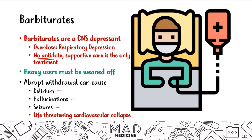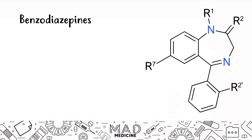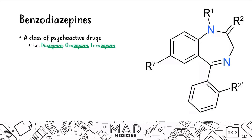The next class of drugs when it comes to substance abuse is benzodiazepines. These are a class of psychoactive drugs, characteristically identified by their suffix '-zepam' or '-pam.' Examples include lorazepam, oxazepam, and diazepam. You need to be able to spot that suffix because if it's given to you as an option, you should know what class of drug is being discussed.